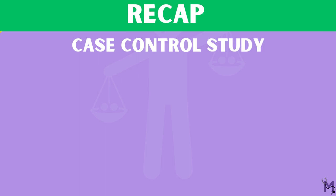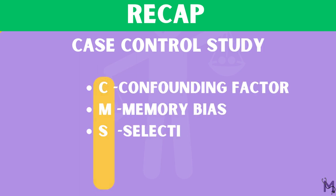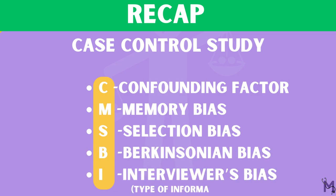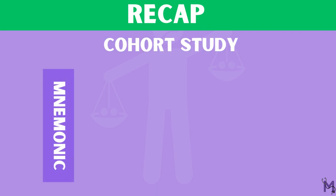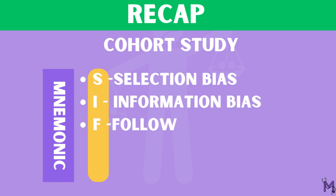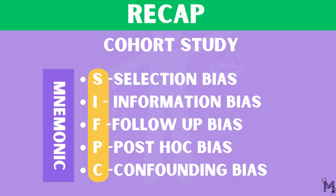A quick recap: the case-control study has five biases — confounding bias, memory bias, selection bias, Berksonian bias, and information bias. All these can be remembered with the mnemonic CM equals SBI. The five biases under cohort study are selection bias, information bias, follow-up bias, confounding bias, and post-hoc bias. These five can be remembered with the mnemonic SIFPC.